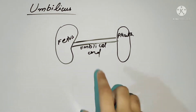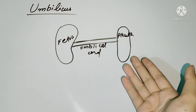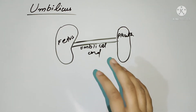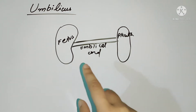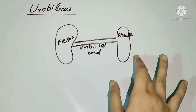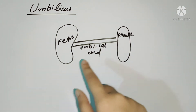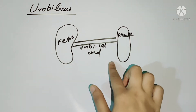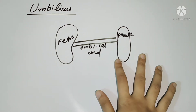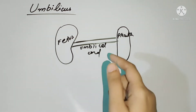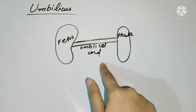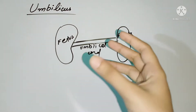After birth, we have the umbilical vessels and ligaments. We have a lot of changes at birth because we have the placenta, which carries the mother's nutrients and provides them to the fetus. The placenta has a fetal surface and a maternal surface. After birth, we cut the umbilical cord.